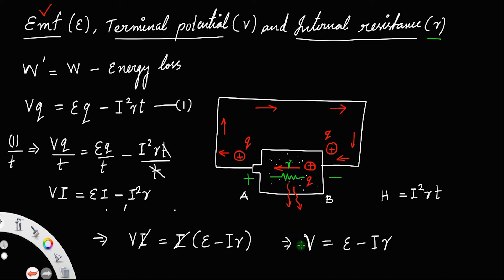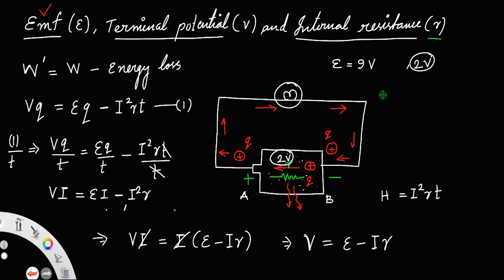What this means is that you cannot convert all of the EMF into terminal potential. Suppose the cell has a rated EMF of E equals 9 volts. In order to light a bulb, if there is an energy loss of 2 volts inside the cell, that is the lost potential. So what you get as the terminal potential is 9 minus 2, which equals 7 volts. The terminal potential will always be less than the EMF of the cell.